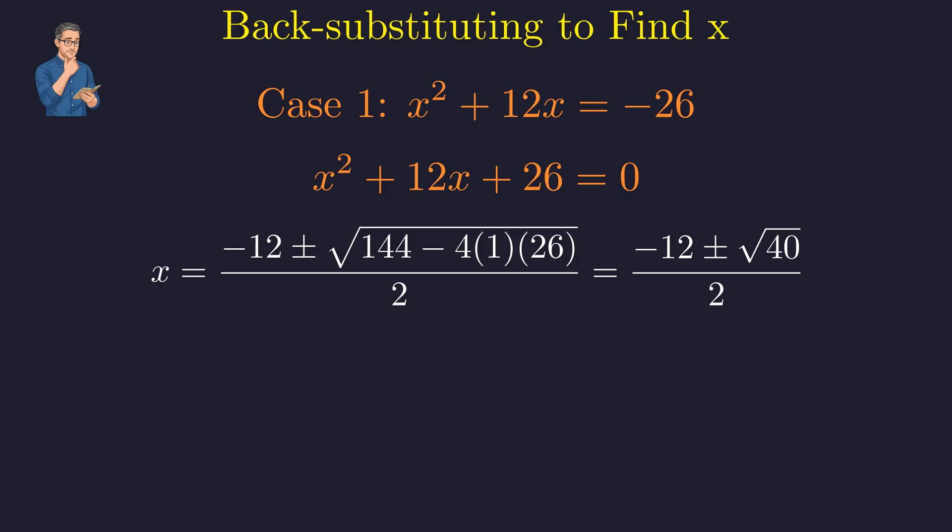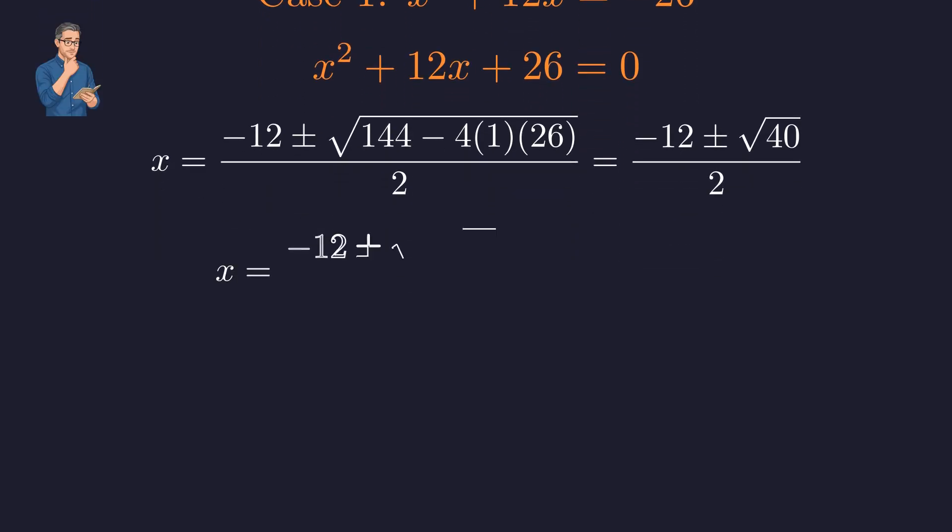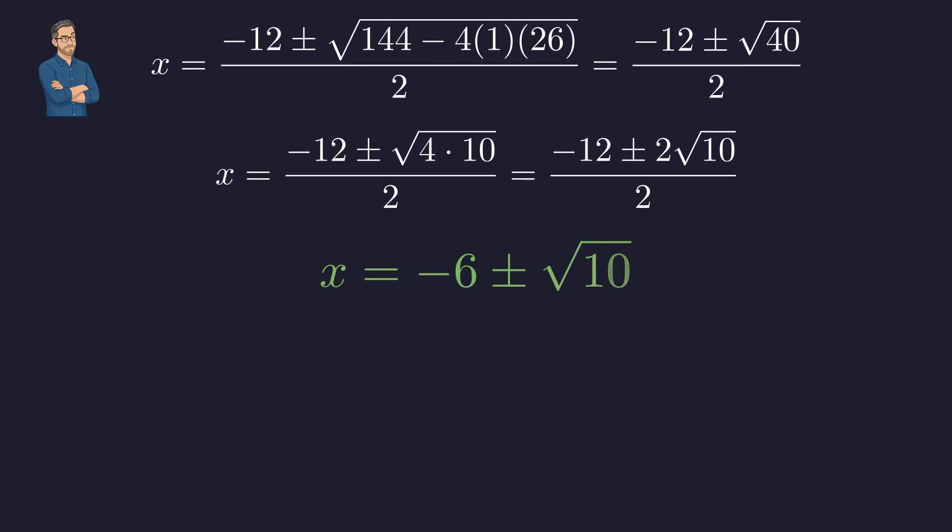Applying the quadratic formula gives us the square root of 40 in the numerator. We simplify the radical as 40 is 4 times 10. Finally, dividing by 2 gives our first two solutions.